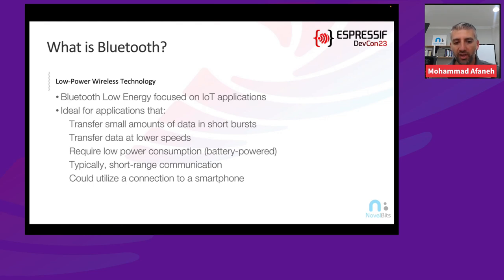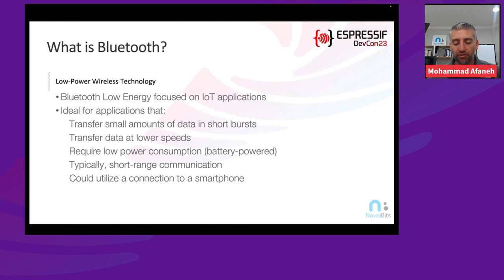BLE was typically designed for short-range communication, although that has changed over the years with more options for achieving much longer range. For personal devices — especially wearables, fitness trackers — where you want to use a smartphone as an interface, Bluetooth Low Energy serves as a great wireless technology because it's embedded in 100% of smartphones today.